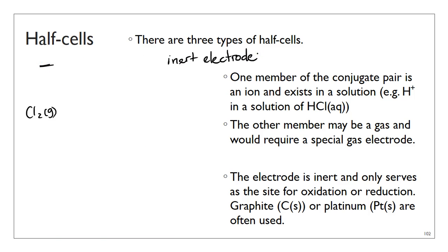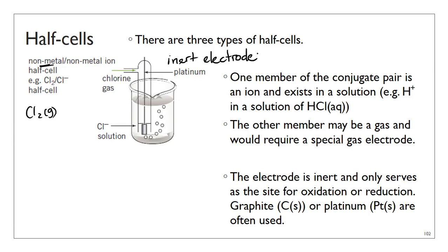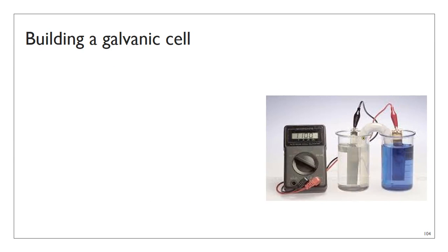Once you have built two half cells, connect the two electrodes with a wire — and through a device if you want to power something — and then add a salt bridge. The salt bridge is also an electrolyte and allows cations to move toward the cathode and anions to move toward the anode, completing the internal circuit. You can also connect your electrodes to a voltmeter to measure the voltage produced by the cell.